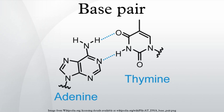Hydrogen bonding is the chemical interaction that underlies the base pairing rules described above. Appropriate geometrical correspondence of hydrogen bond donors and acceptors allows only the right pairs to form stably. DNA with high GC content is more stable than DNA with low GC content, but, contrary to popular belief, the hydrogen bonds do not stabilize the DNA significantly, and stabilization is mainly due to stacking interactions.